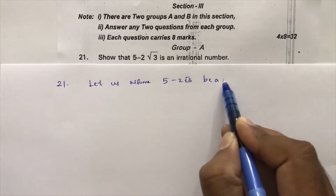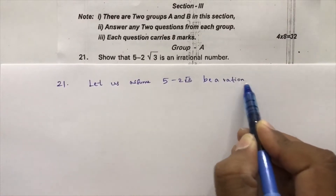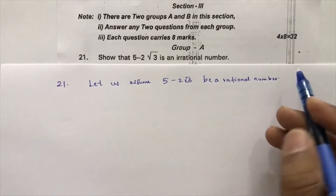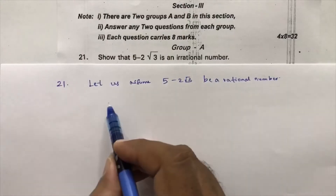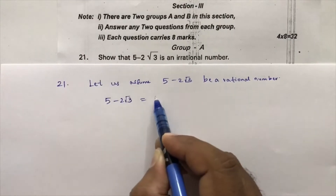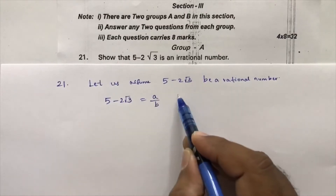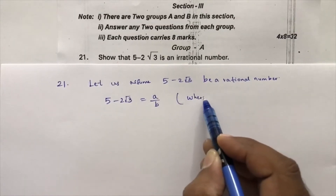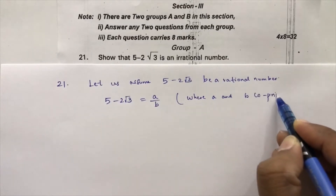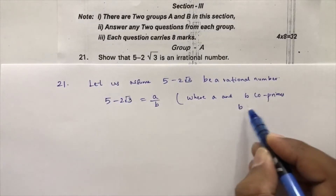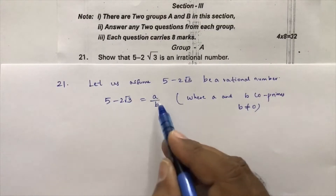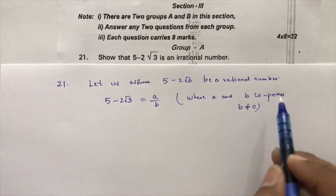When it is a rational number, we can write it in the form of p by q. So here I will consider 5 minus 2 root 3 equals a by b, where a and b are co-primes and b is not equal to 0, because if b is 0 this expression becomes undefined.